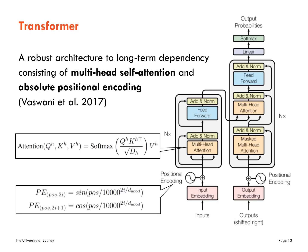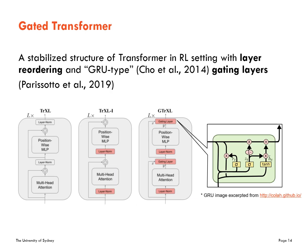Transformers is one of the greatest inventions in the NLP area, achieving state-of-the-art performance in many studies. It is particularly robust to long-term dependency through multi-head attention and positional encoding, making it suitable for partially observable reinforcement learning. However, Transformers does not converge well in reinforcement learning. According to one study, simply changing the placement of layer normalization and using a GRU-like gating layer makes Transformers learn stably in reinforcement learning. These tricks are applied to our model as well.